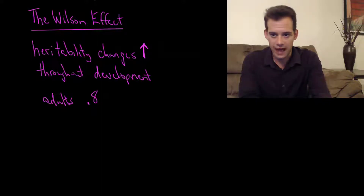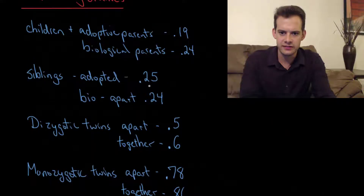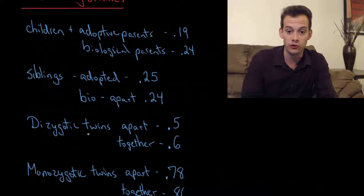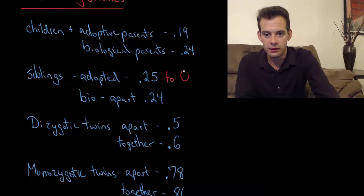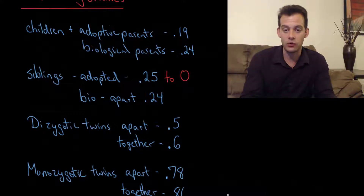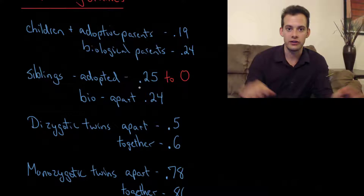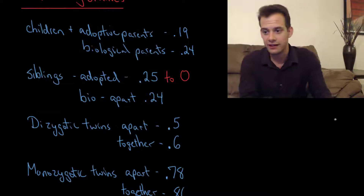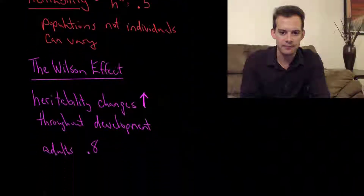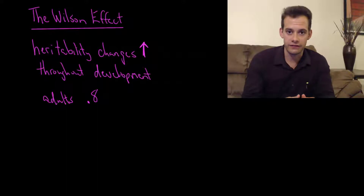Going back to the correlation for adopted siblings — that 0.25 figure — if you look at it over time, as those siblings get older and older, this drops to 0. There's essentially no relationship between adopted siblings in terms of IQ correlation by the time they're adults. When they're children their IQs are more similar; as they get older their IQs diverge more and more until there's really no correlation between them. That relates directly to the Wilson effect — heritability increasing over time — and all the explanations given for the Wilson effect could also explain this drop in adopted sibling IQ correlation.